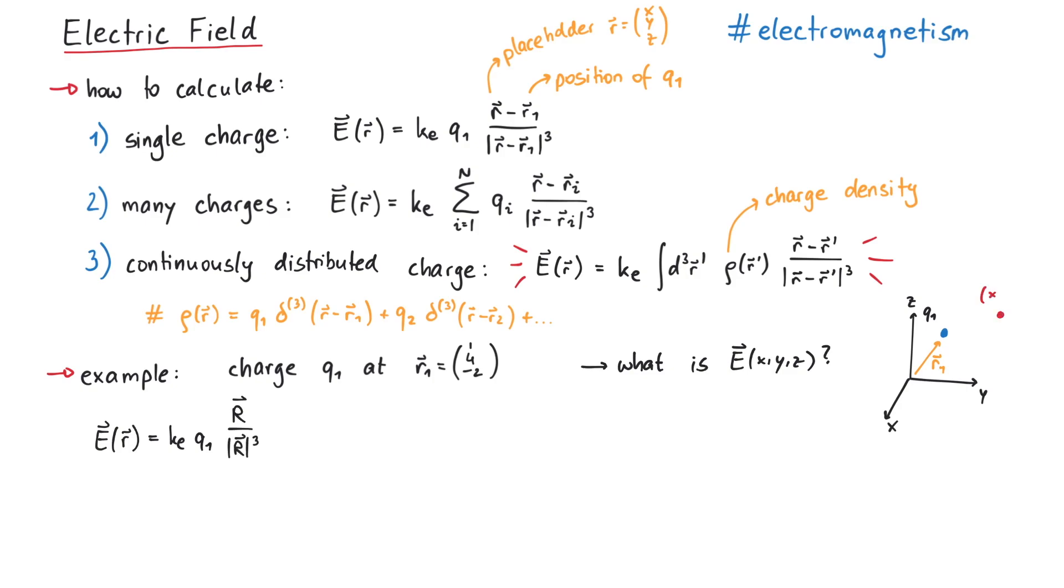And this vector, uppercase R, has the point from R1 to R, so it's given by R minus R1, which yields x minus 1, y minus 4, z plus 2. The length of this vector looks like this, and altogether, the electric field is given by this expression.